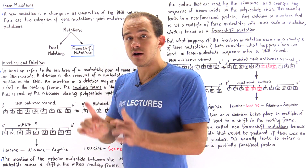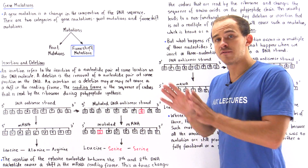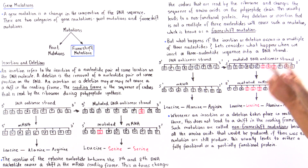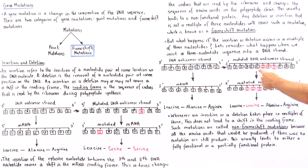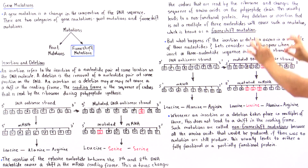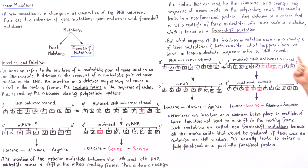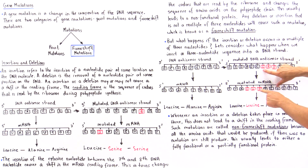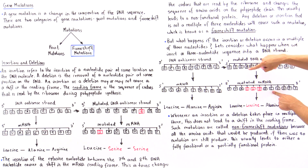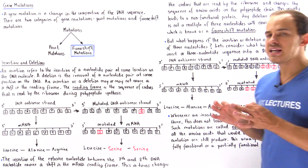Instead of inserting a single nucleotide, which is not a multiple of three, let's insert exactly three nucleotides — the sequence CAG — between the 6th and 7th nucleotide on the DNA strand. When we transcribe this mutated antisense strand, the complements give us: G→C, A→U, T→A, G→C, A→U, C→G, C→G, G→C, A→U, G→C, G→C. This produces our mutated mRNA strand.